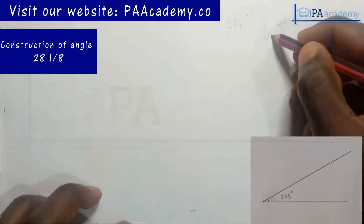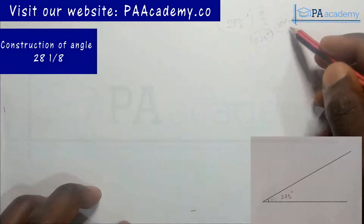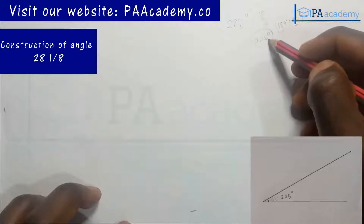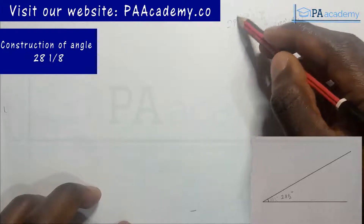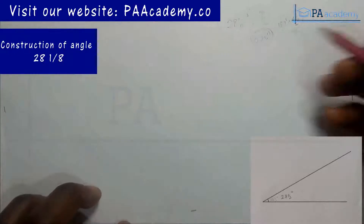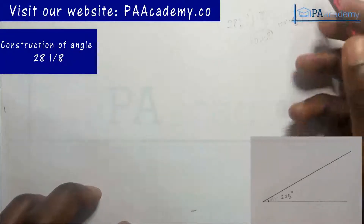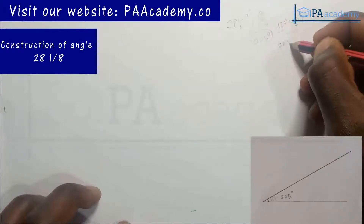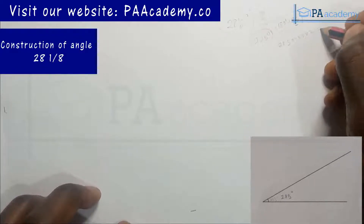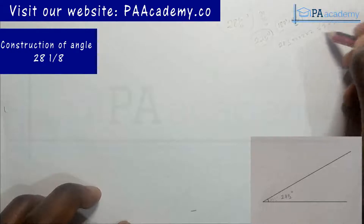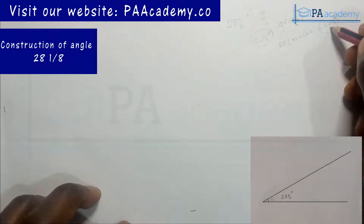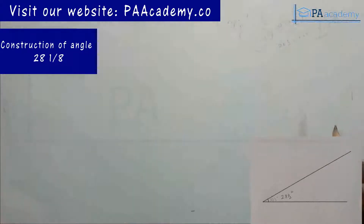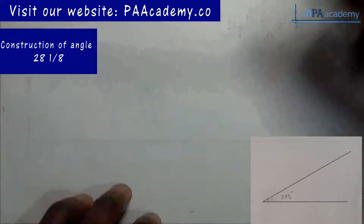Once we achieve angle 225 using 180 plus 45, what we actually did was 28.5 times 2, times 2, times 2, times 2 to get 225. So if we are able to get 225° by construction, we can bisect it three times to give us 28 and a half. That's the mathematical explanation — now let's get to the practical work.